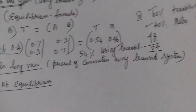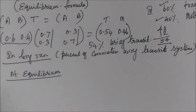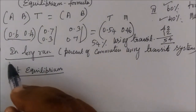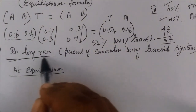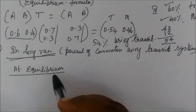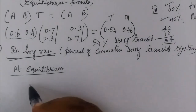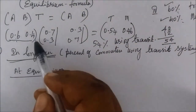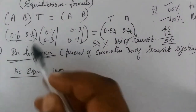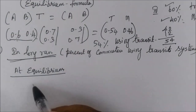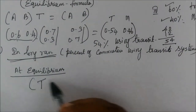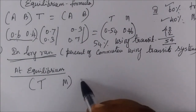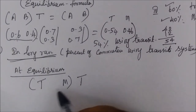So 54% are using Transit. This is the long run calculation. This is the equilibrium stage formula. This is the question value — the result for Transit and Metro.